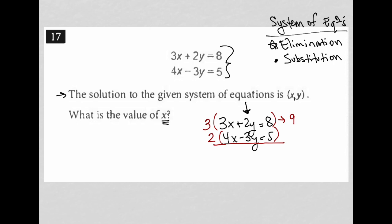In doing so, I now would have 9x plus 6y equals 24. And on the bottom here, I'd have 8x minus 6y equals 10. So what did I do?